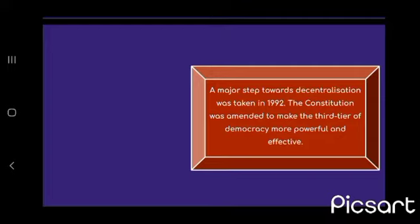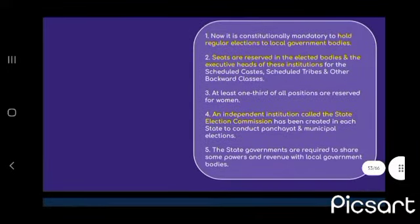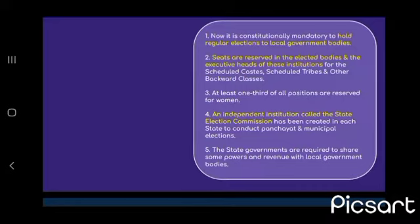A major step toward decentralization was taken in 1992. The constitution was amended to make the third tier of democracy more powerful and effective. It is now constitutionally mandated to hold regular elections to local government bodies. Seats are reserved in elected bodies and executive heads for Scheduled Castes, Scheduled Tribes, and other backward classes. At least one-third of all positions are reserved for women. An independent institution called the State Election Commission has been created in each state to conduct panchayat and municipal elections. The state government is required to share some powers and revenue with local government bodies.